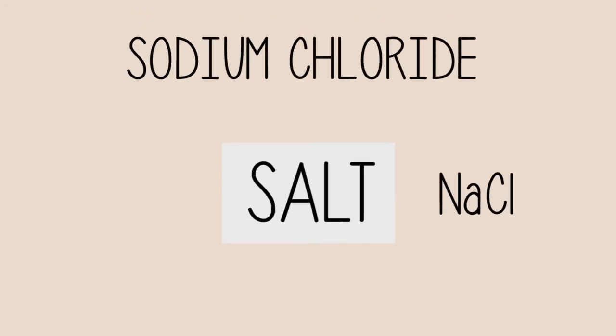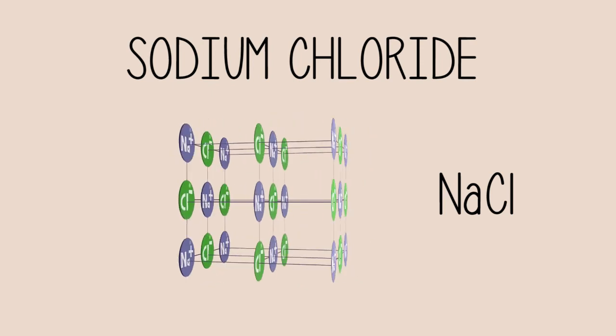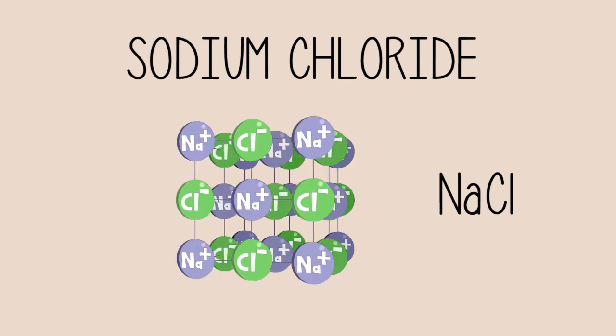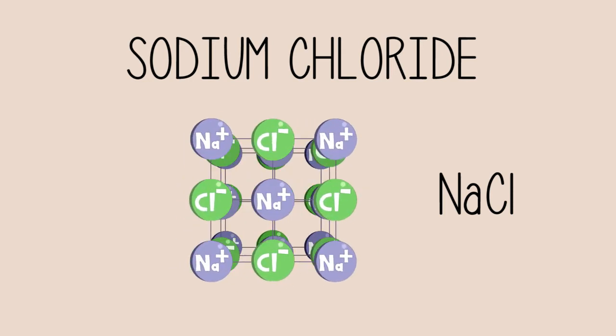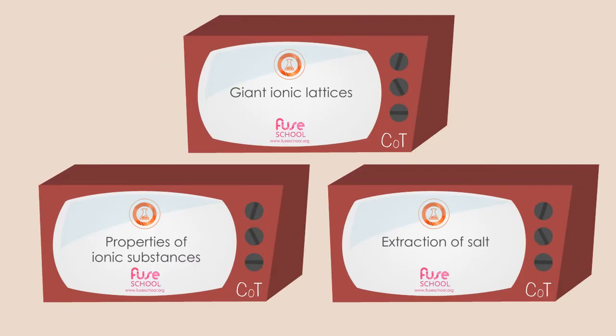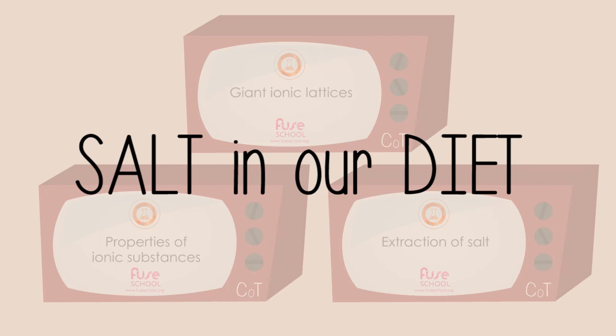You may already know that salt is the common term for sodium chloride, which is an ionic compound consisting of sodium ions and chloride ions arranged in a 3D lattice structure. You can learn more about the properties and the extraction of salt in other videos on this channel. In this particular lesson, we will concentrate on the importance of salt in our diets.